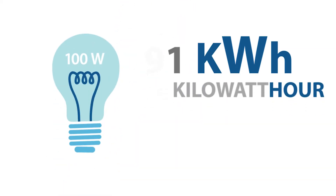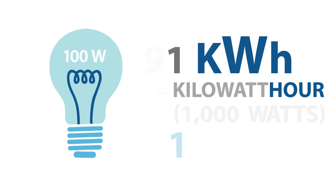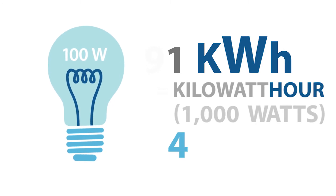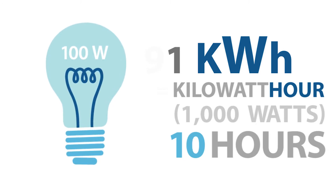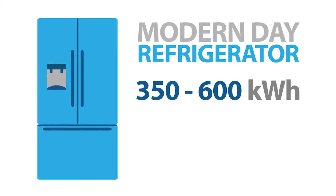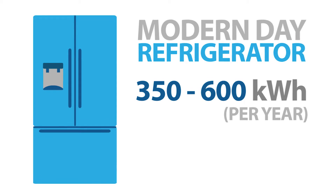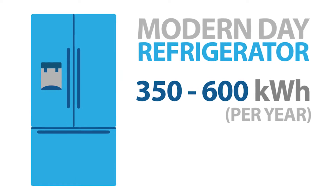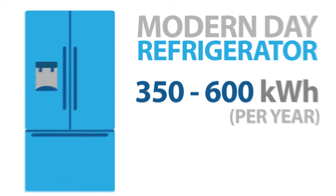A 100-watt light bulb takes one kilowatt hour, or a thousand watts, to keep the light on for ten hours. A modern-day refrigerator typically uses between 350 and 600 kilowatt hours per year, depending on the size and efficiency of the particular model.